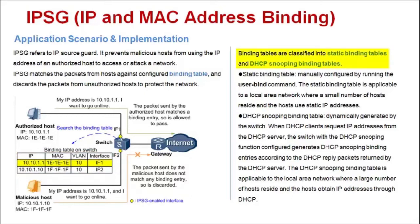Binding tables are classified into static binding tables and DHCP snooping binding tables. A static binding table is manually configured by running the userbind command. The static binding table is applicable to a local area network where a small number of hosts reside and the hosts use static IP addresses.